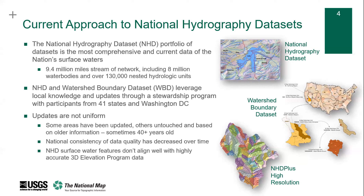Our current approach to national hydrography datasets — the National Hydrography Dataset, the Watershed Boundary Dataset, and the NHDPlus High Resolution — represents arguably the most comprehensive and current data of the nation's surface water. Our management technique to date has leveraged local knowledge and direct updates through our stewardship program, which has participants in 41 states and Washington, D.C. However, our hydrography data does not necessarily align everywhere with our high-resolution 3DEP data, and that is an issue we are tackling going forward.